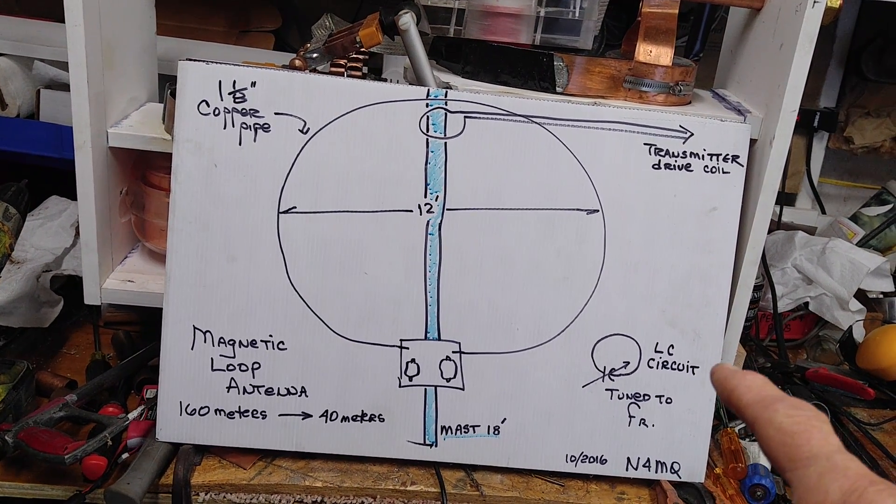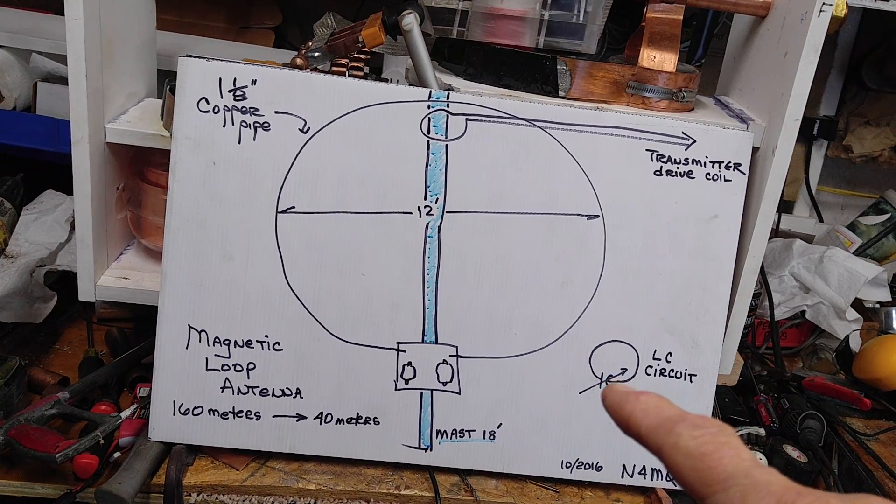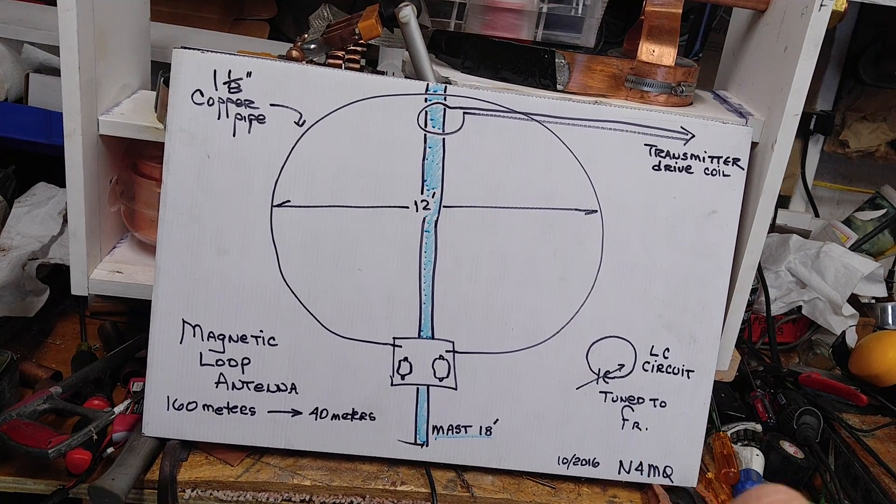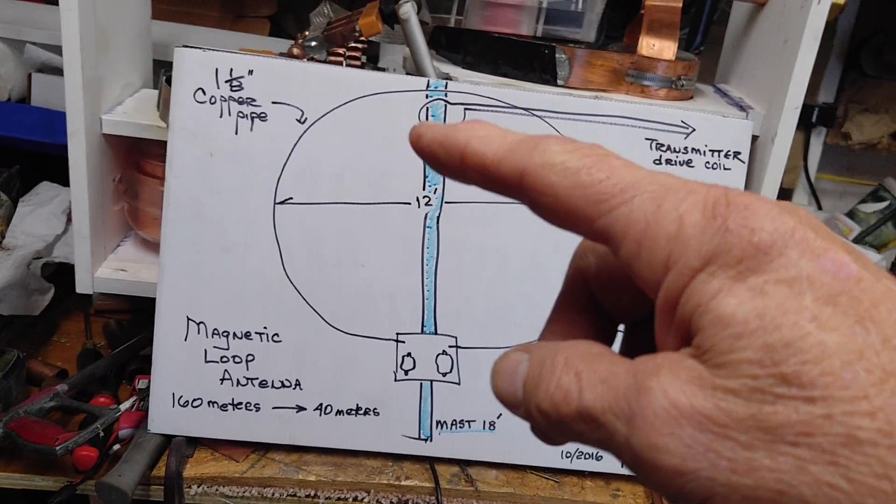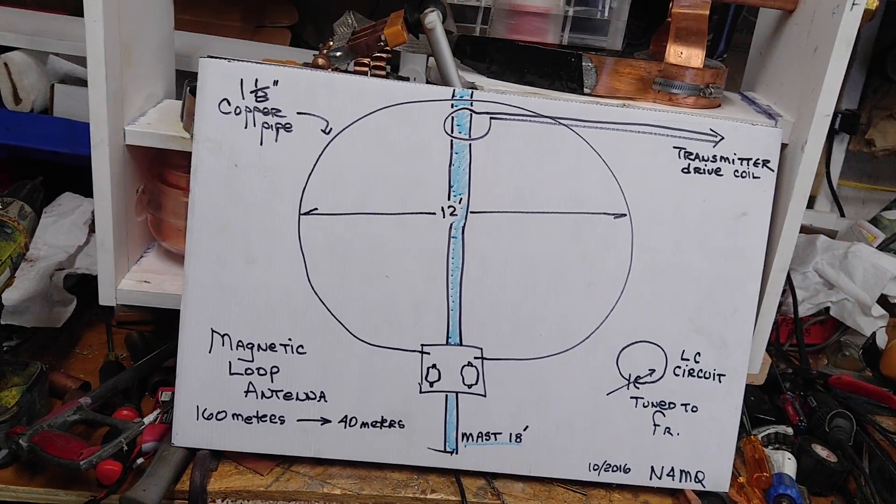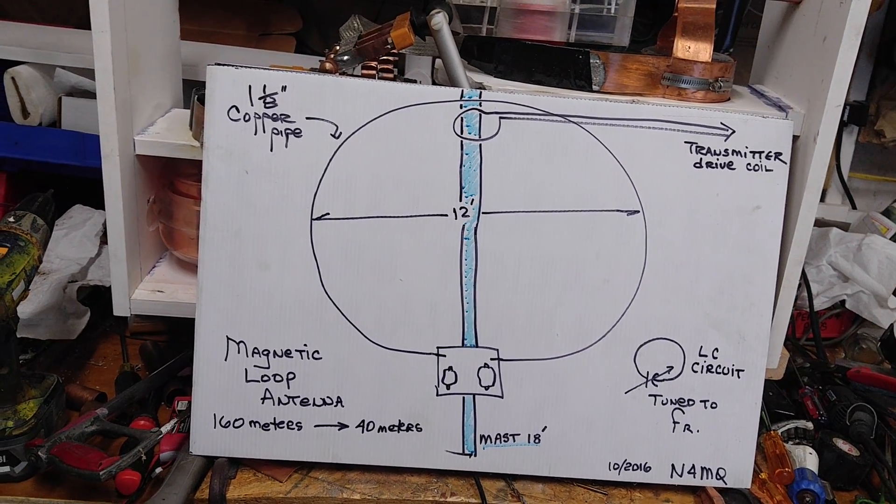Over here we have an LC circuit. Essentially you have a large coil with a capacitor to resonate it and it's tuned to your frequency of resonance. The way it works on mine is I have a single turn coil, which is the drive coil for the transmitter, and then this loop sits up in the air. The top of the loop is about 18 feet high. The bottom of the loop is about six feet high.